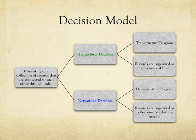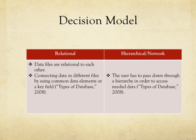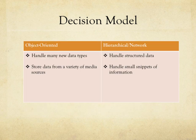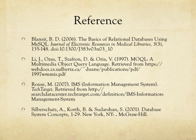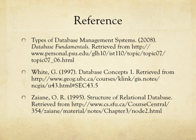In a relational database, the data files are relational — it connects data in different files by using common data elements or a key field. The hierarchical and network models require the user to pass down through a hierarchy in order to access the needed data.